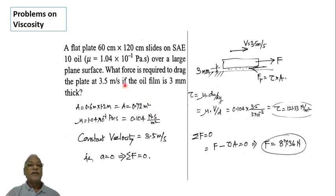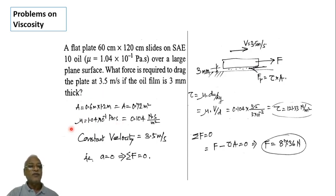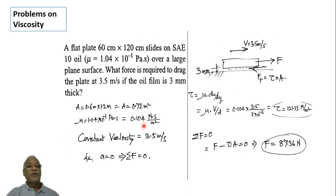The question asks: what force is required to drag the plate at 3.5 meter per second if the oil film is 3 millimeter thick? The dynamic coefficient of viscosity is 1.04 into 10 raised to minus 1 Pascal second, which simplifies to 0.104 Pascal second. The plate must move at constant velocity.